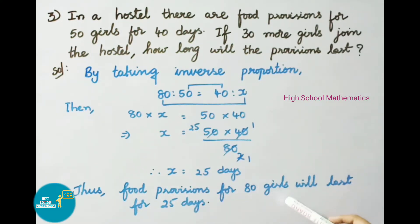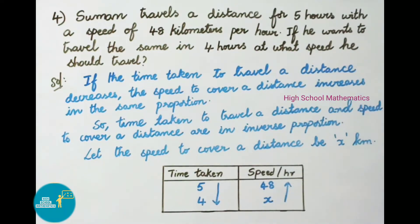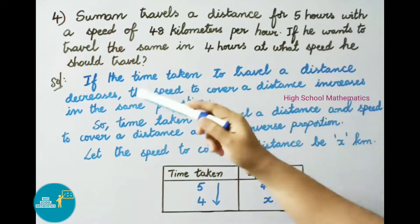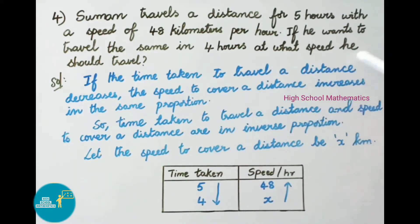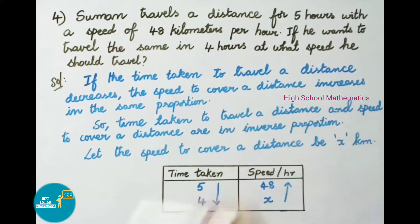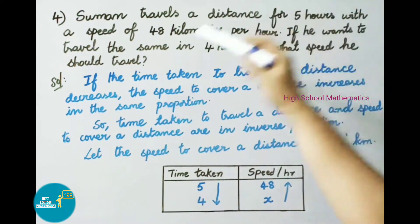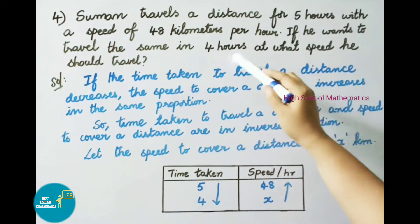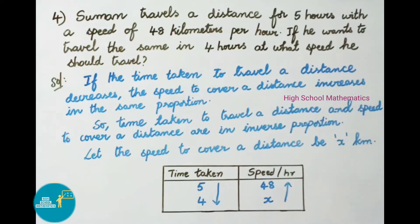Thus food provisions for 80 girls will last for 25 days. See now question number 4. Suman travels a distance for 5 hours with a speed of 48 kilometers per hour. If he wants to travel the same distance in 4 hours, at what speed should he travel? Let us see the solution. If the time taken to travel decreases, the speed increases in the same proportion.